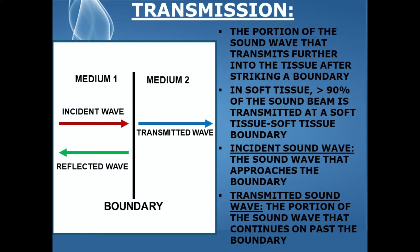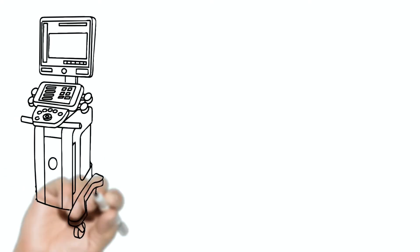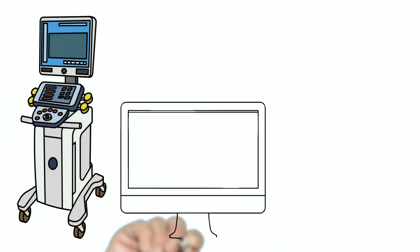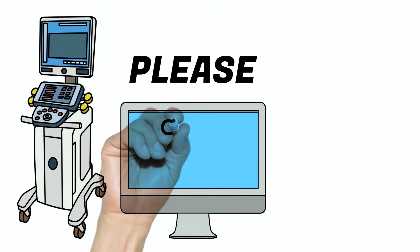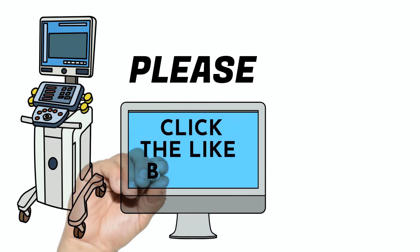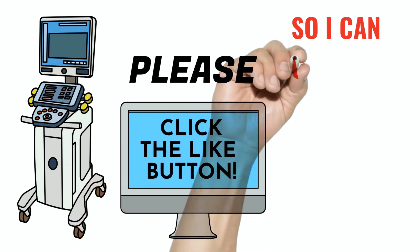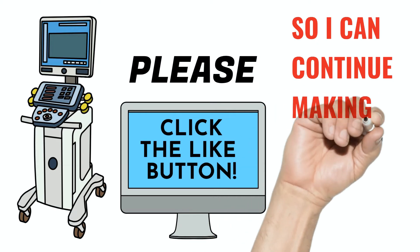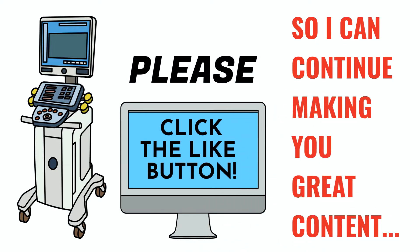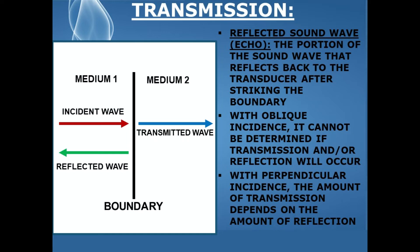The transmitted sound wave is the portion of the sound wave that continues on past the boundary, deeper and deeper into the tissues. The reflected sound wave, represented by the green arrow on the diagram, is the portion of the sound wave that reflects back to the transducer after striking the boundary, and this is also known as an echo.